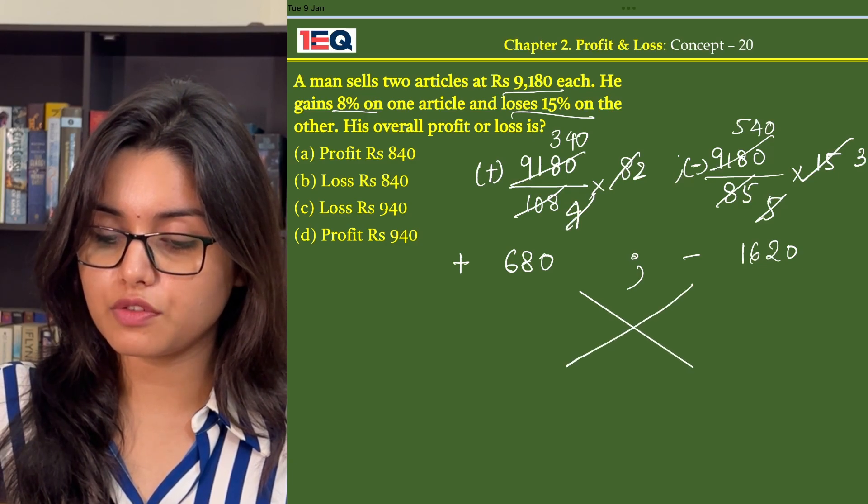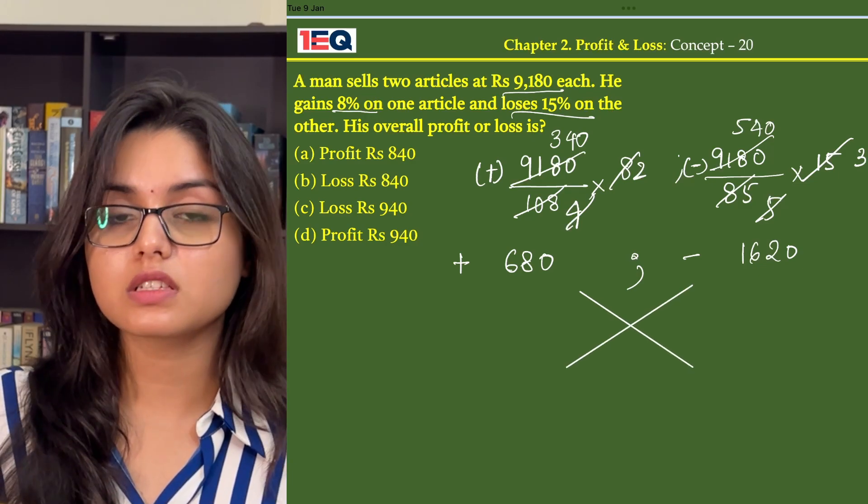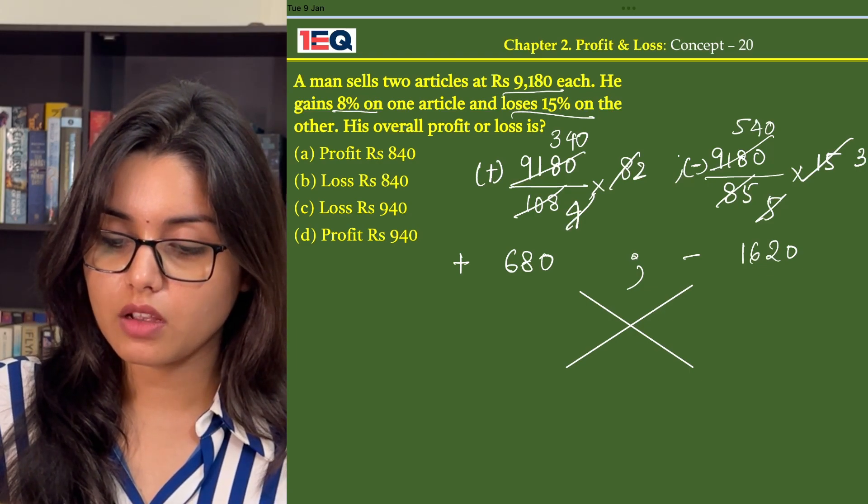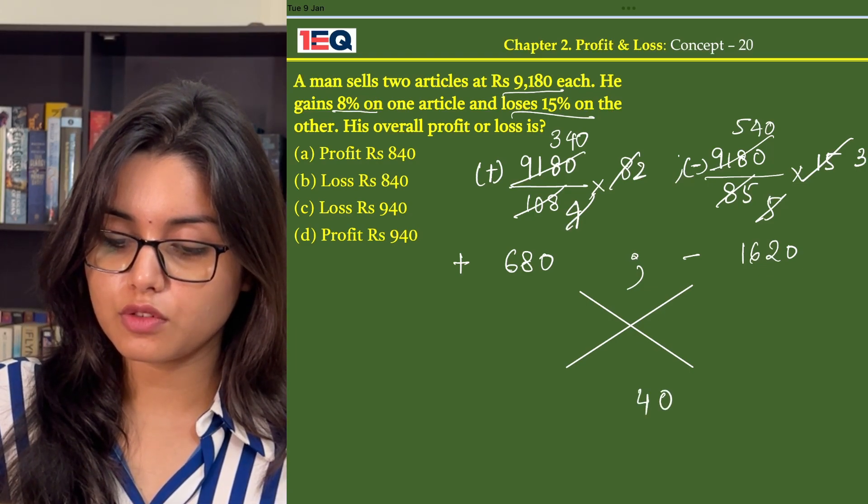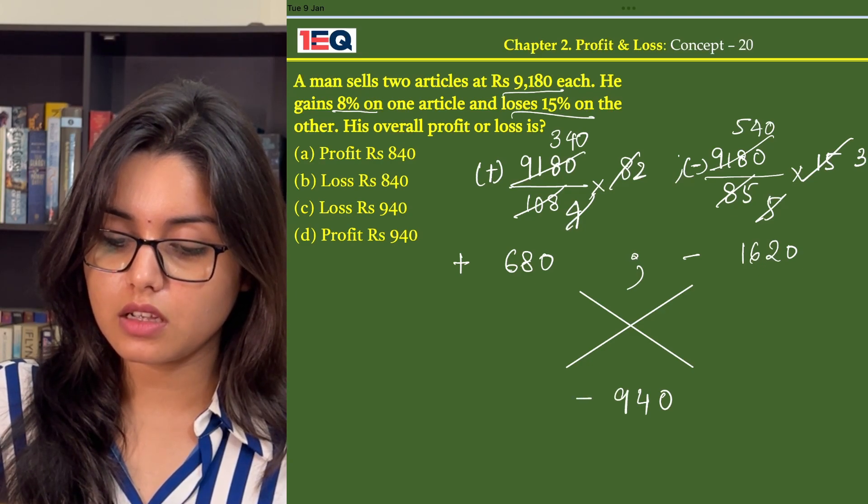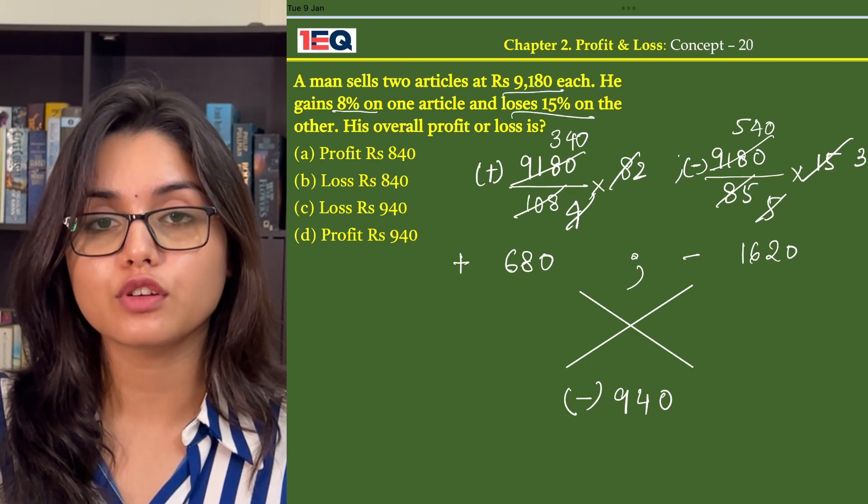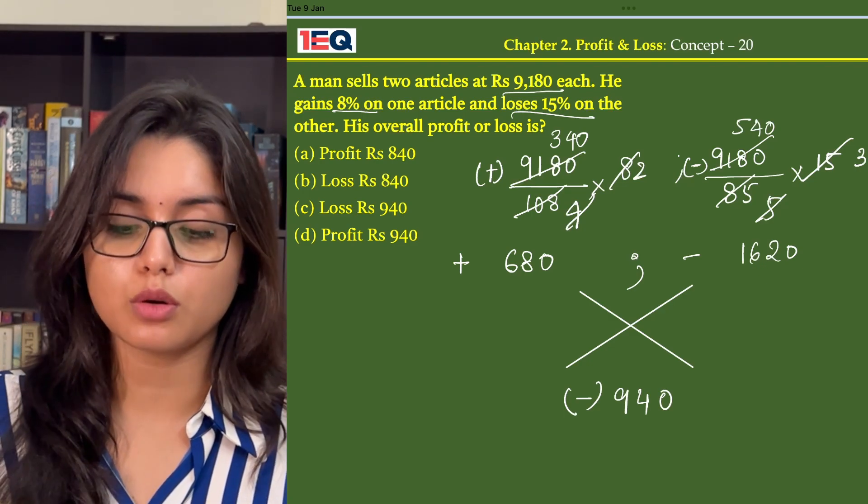Now we will find the net amount from here. So 16, 20 minus 6, 80 gives us 9, 40 negative. That means he had a loss of Rs 940. So our answer to this question is option C.